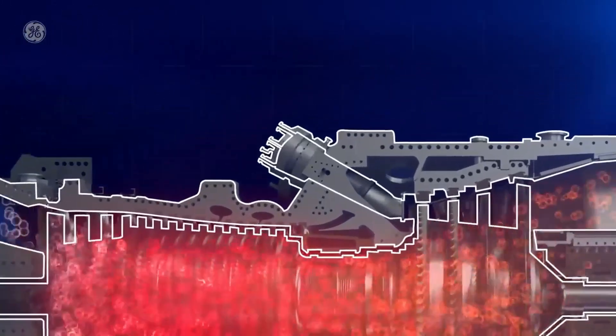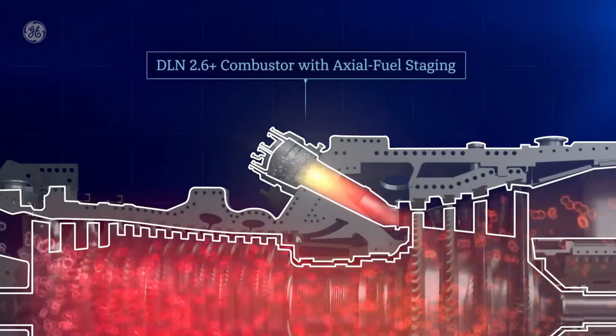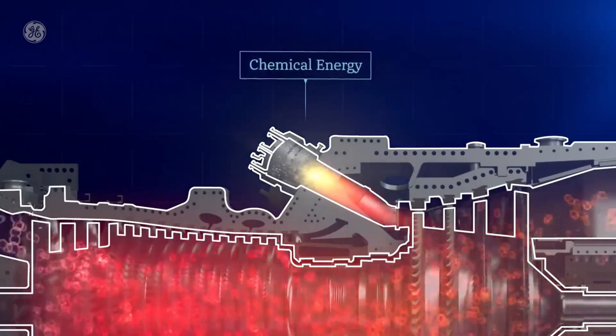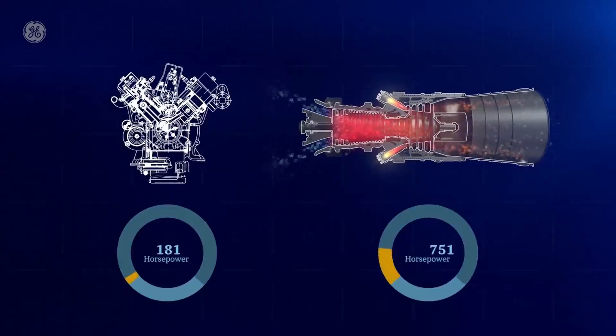Next, fuel is injected into the combustor where it mixes with a hot compressed air and is burned. This is chemical energy at work. Essentially, this is what happens in your family car's engine, but at about 2,900 times more horsepower.